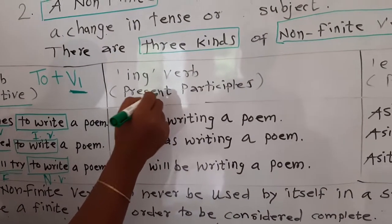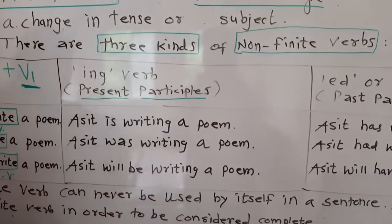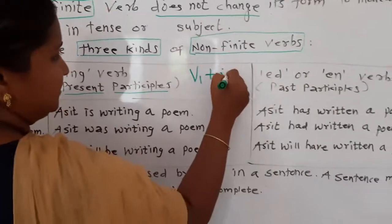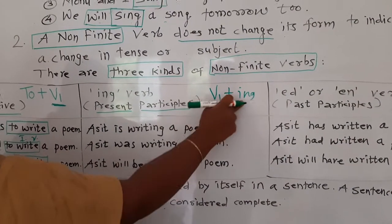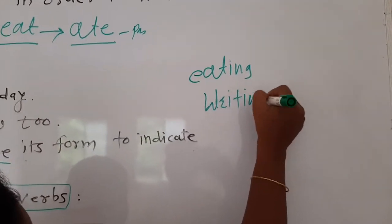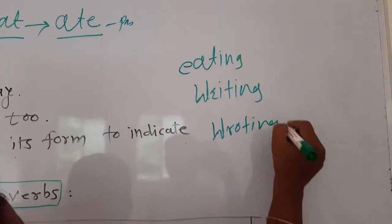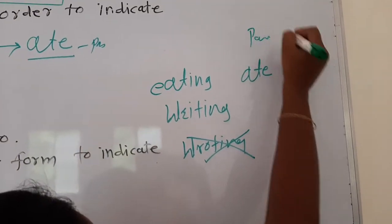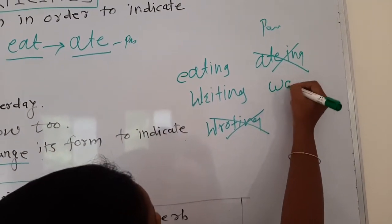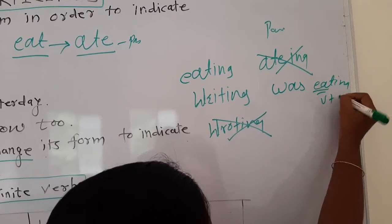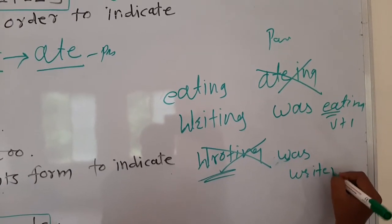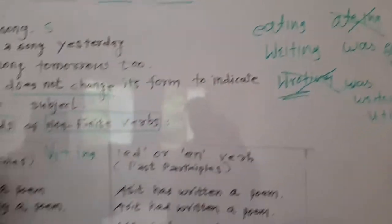The next non-finite verb is the present participle. It is always V1 plus ING — for example, 'eating' and 'writing.' You never say 'eting' or change the ING form for past tense. Instead, you use 'was eating' or 'was writing' — but 'eating' and 'writing' themselves remain V1 plus ING. So 'Asit is writing,' 'Asit was writing,' 'Asit will be writing' — present, past, future — but the participle form stays the same.